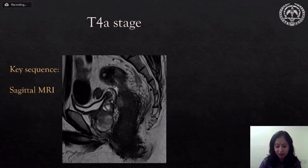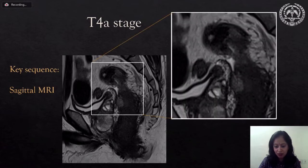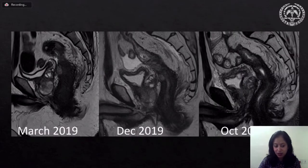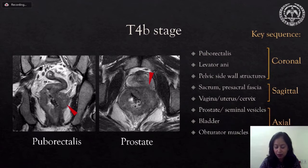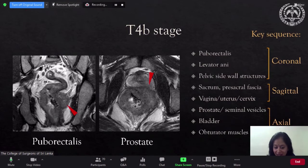T4A stage is when there is peritoneal infiltration. In this T2 very dark growth, it is easy to appreciate hypointense tumor infiltrating the pelvic peritoneum along the dome of the bladder and the seminal vesicle. We can see how this focal peritoneal infiltration progresses to diffuse peritoneal metastasis with ascites and later a sheet of tumor lining the serosal surface of pelvic small bowel loops. T4B disease is when there is adjacent structure infiltration, and levator ani infiltration is best depicted on coronal MRI.